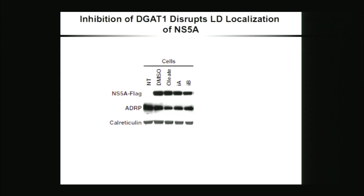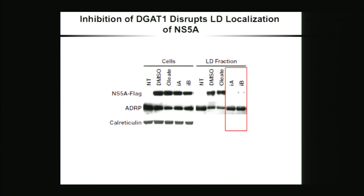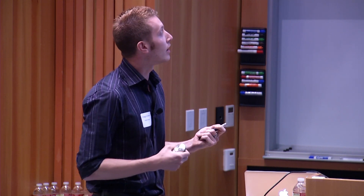To further prove this phenotype, we expressed NS5A, treated with the different DGAT1 inhibitors, and performed subcellular fractionation—purifying the lipid droplet fraction. Following inhibition of DGAT1, NS5A could not be found in the lipid droplet fraction anymore, even though another lipid droplet protein, ADRP, is still found in these lipid droplets. We also observed a similar phenotype using shRNAs against DGAT1, confirming that DGAT1 is required for NS5A trafficking to lipid droplets.